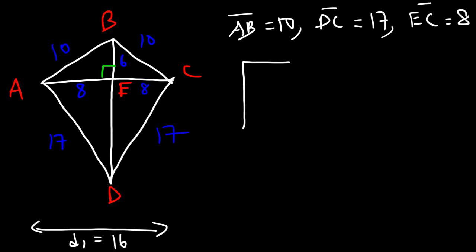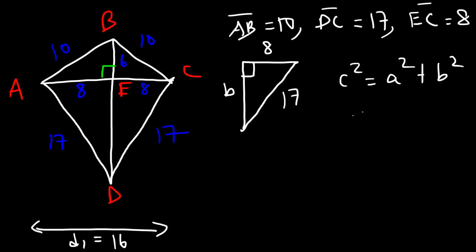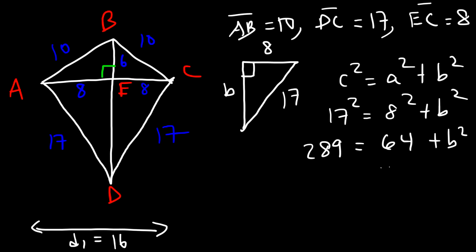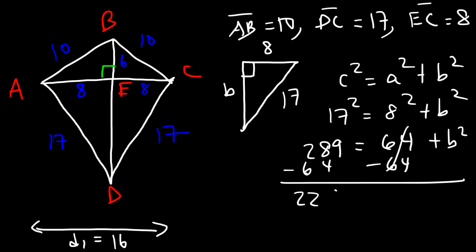Now let's focus on the second right triangle, triangle CED. EC is 8 and the hypotenuse DC is 17. We need to find DE. Using the Pythagorean theorem: 17 squared is 289, 8 squared is 64. Subtracting: 289 minus 64 is 225. The square root of 225 is 15, so ED is 15 units long.